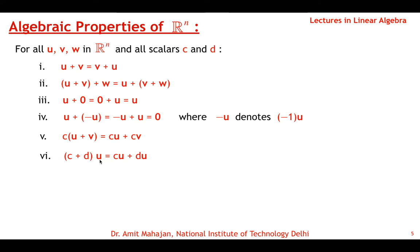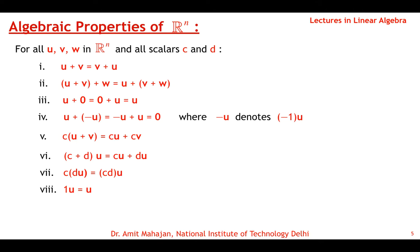Property (6) is distributivity with respect to scalar addition: (c + d)U = cU + dU. Adding two scalars and then multiplying by a vector gives the same result as multiplying each scalar with the vector and then adding. Property (7) is associativity with respect to scalar multiplication: c(dU) = (cd)U. Property (8) is the multiplicative identity: 1·U = U. All these properties hold for Rn spaces.